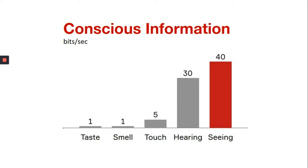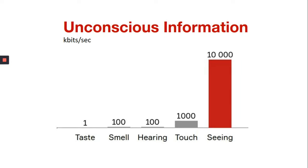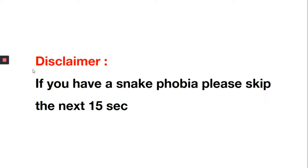Now, apart from the conscious information, there is something known as unconscious information which I will cover in a minute. The numbers here are approximate, but 1,000 kilobits per second for touch and an amazing 10,000 kilobits per second for seeing. This is the fastest sense we have by far.